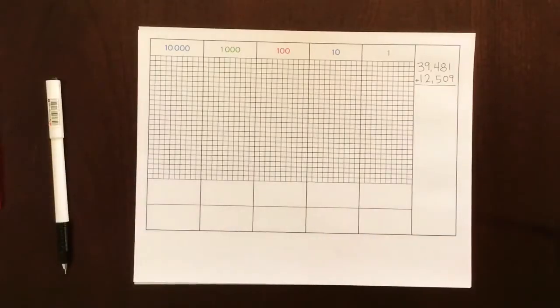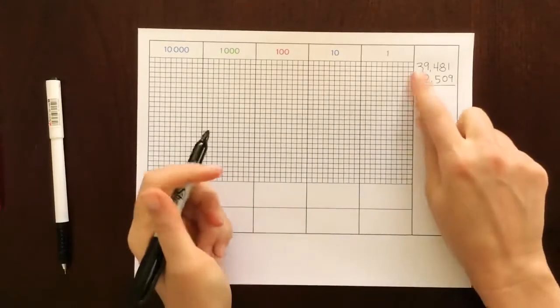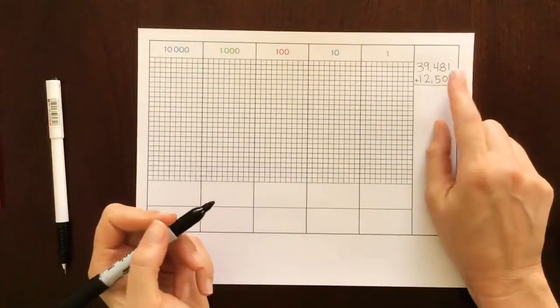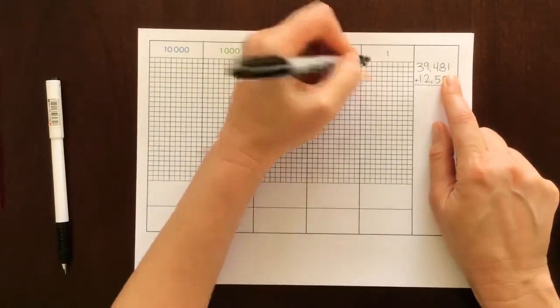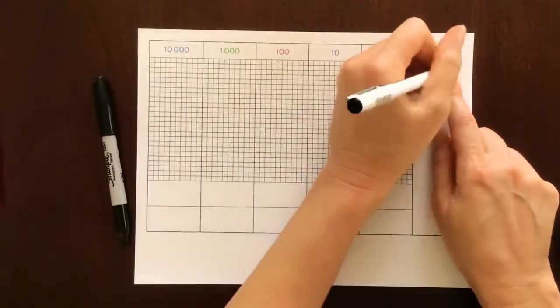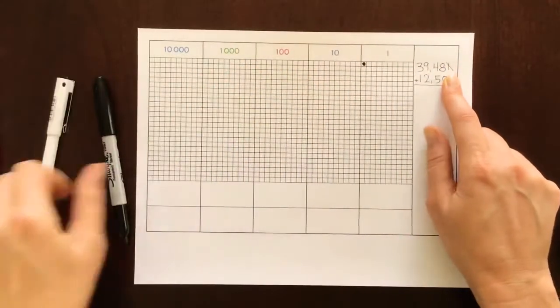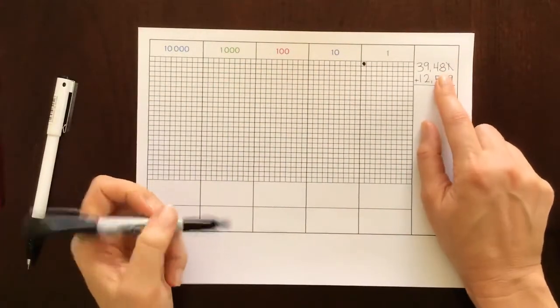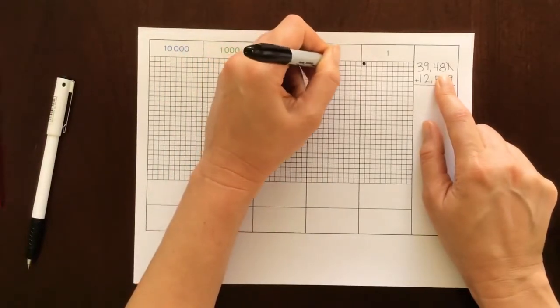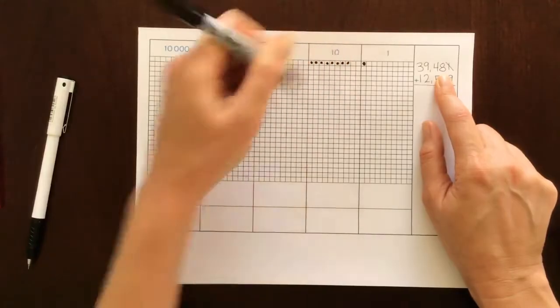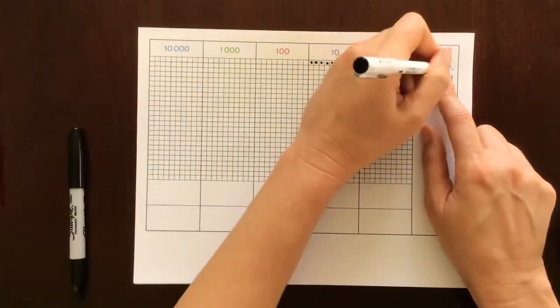Let's start by making the first number on the dot board. We'll start in the ones place and we have one dot there and we'll cross that off. Next is the tens place. We have eight tens: 1, 2, 3, 4, 5, 6, 7, 8, and we'll cross that off.